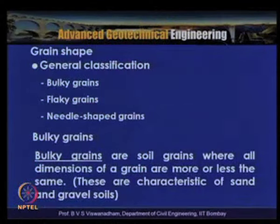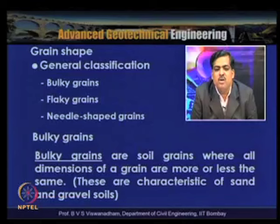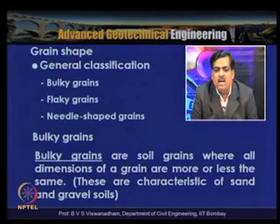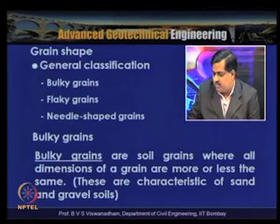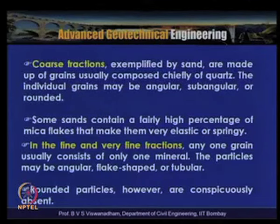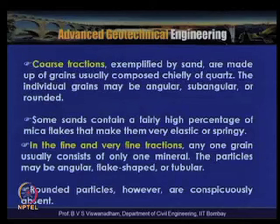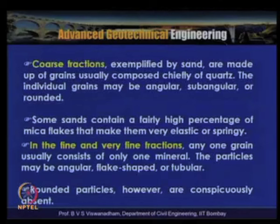Based on their sizes, grains are classified into three types: bulky grains, flaky grains, and needle shaped grains. Bulky grains are soil grains where all dimensions are more or less the same, and these are characteristic of sand and gravel soils. Coarse fractions exemplified by sand are made up of grains usually composed chiefly of quartz, and the individual grains may be angular, subangular, or rounded — angular or subangular due to weathering, or rounded if deposited in a river bed.